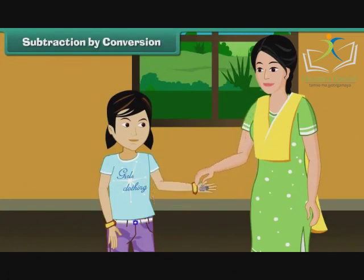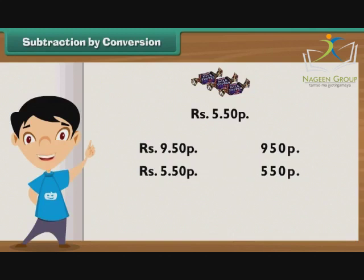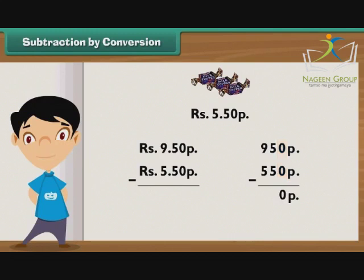Subtraction by conversion. Raveena gets 9 rupees 50 paise from her mother as pocket money. She spends 5 rupees 50 paise on toffees. What is the pocket money left with her? 9 rupees 50 paise means 950 paise and 5 rupees 50 paise means 550 paise. Write 550 paise under 950 paise and subtract. 0 minus 0 is 0, 5 minus 5 is 0, and 9 minus 5 is 4. So the amount left with Raveena is 400 paise, that is 4 rupees.